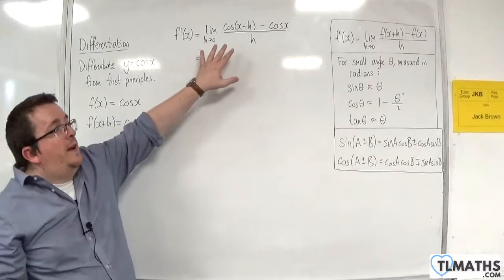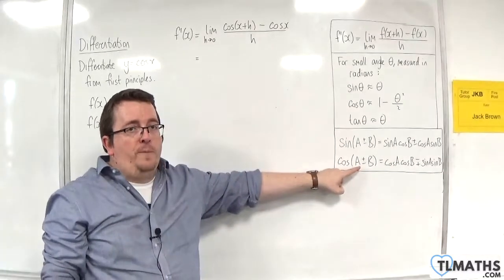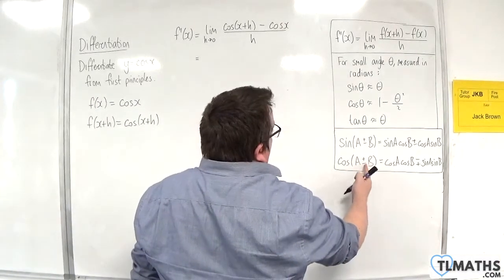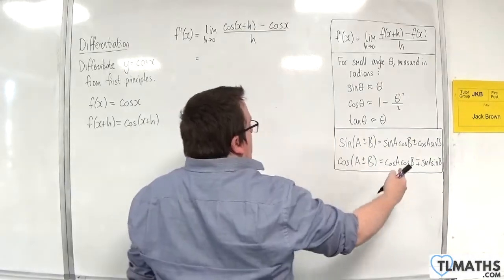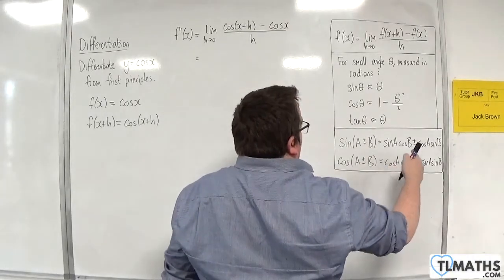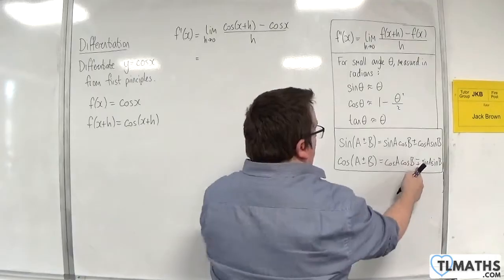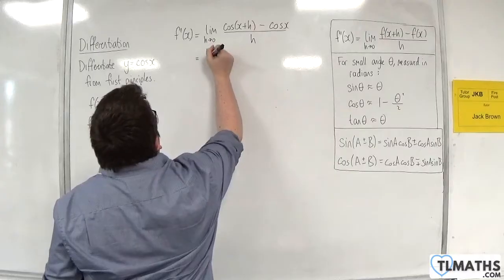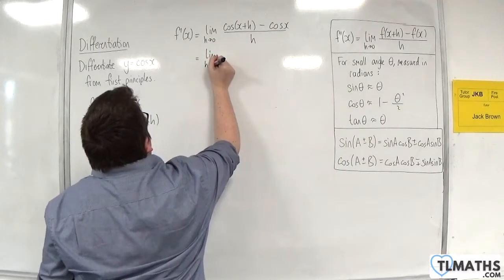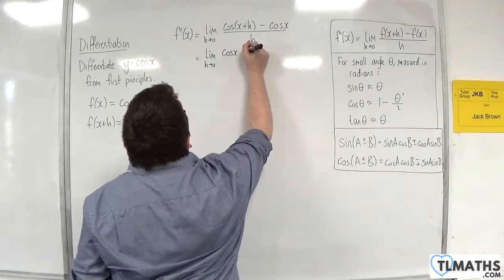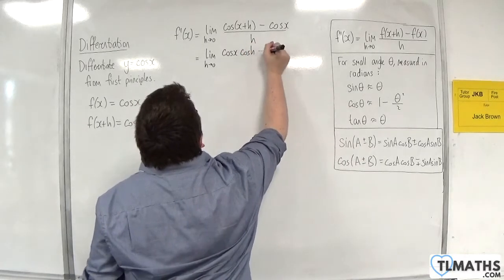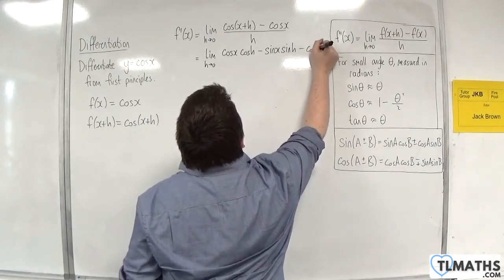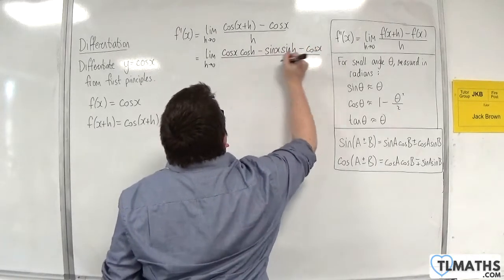Now, with that cosine of x plus h, I'm going to use the compound angle formula, where a is x and b is h, and we've got a plus there. So we'll get cosine x cosine h, take away — because that's a plus — sine x sine h. So we'll have the limit as h tends to 0 of cosine x cosine h, take away sine x sine h, take away cosine x, all over h.